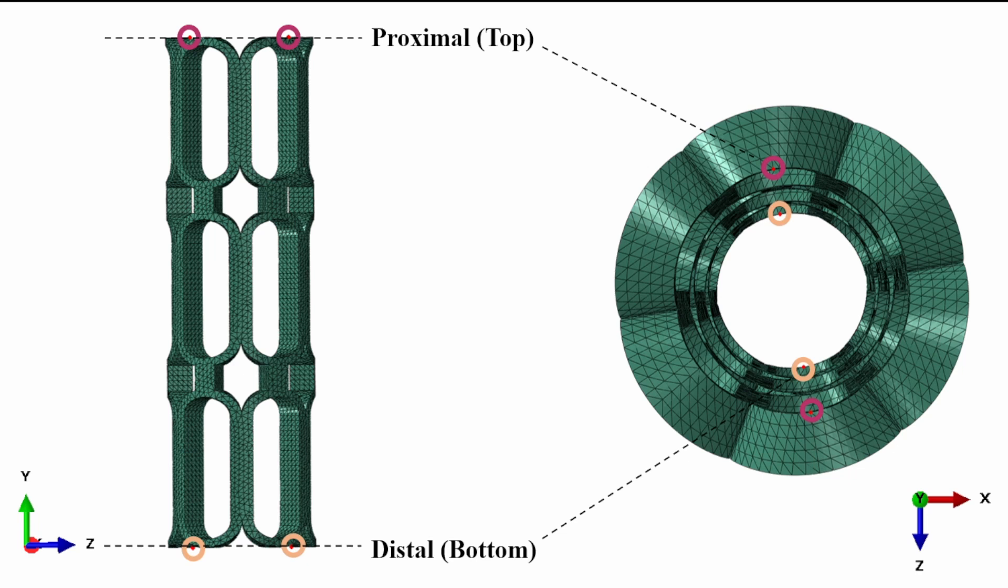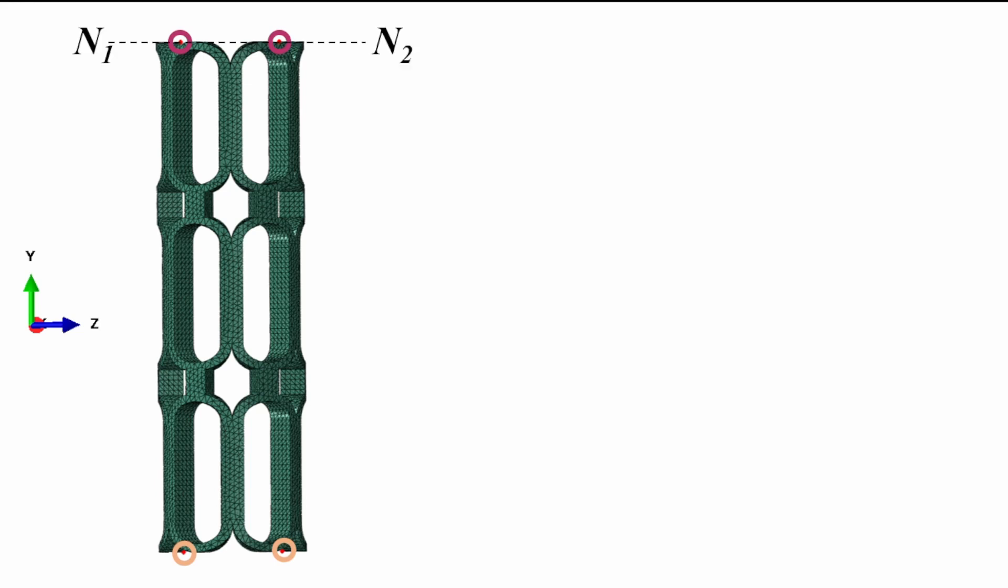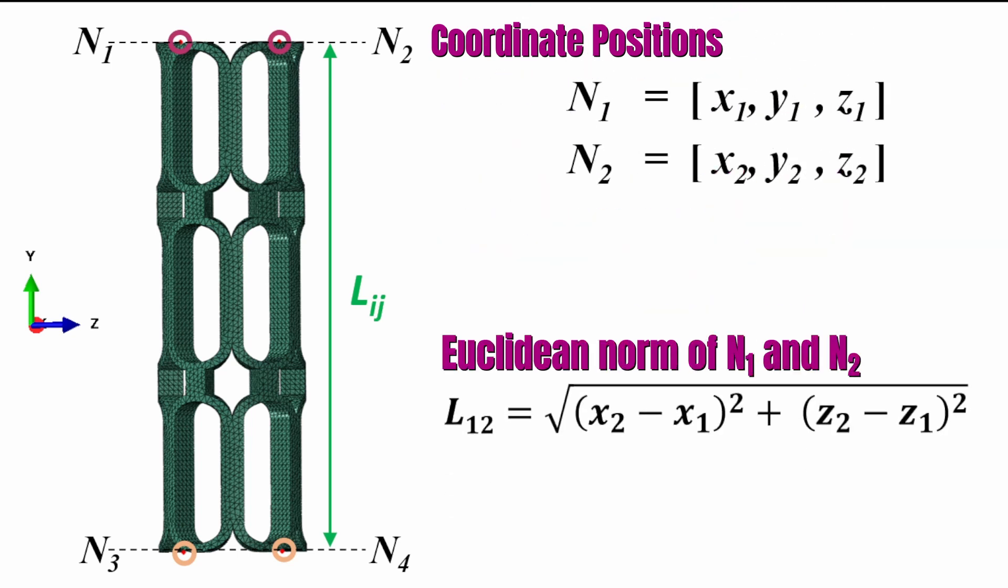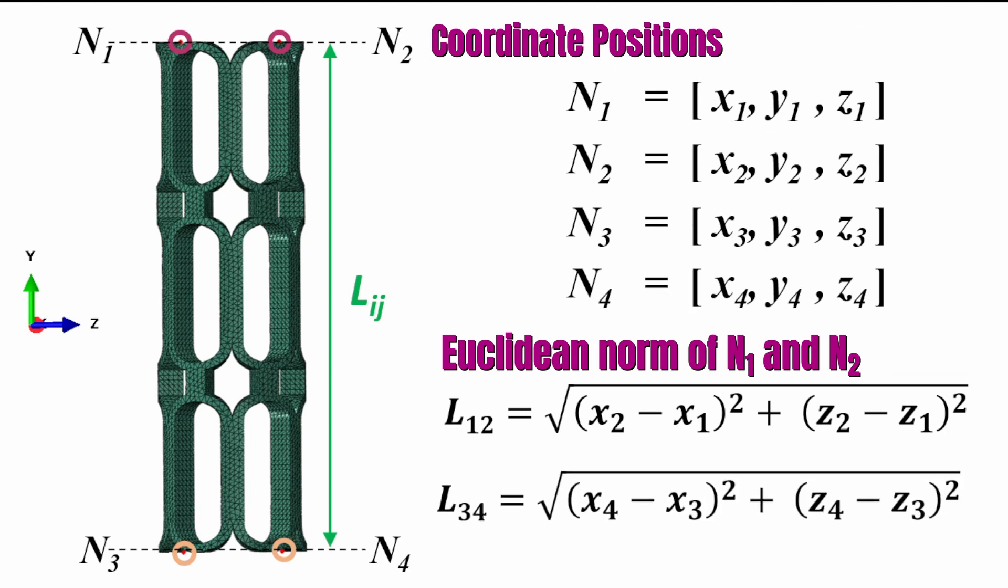Remember, what we're trying to determine here is the longitudinal retraction. So we need to find the total length of this stent and see how much this total length will change during the deformation, and that will lead us to determining the longitudinal retraction. If you look more closely here, I've got node one and node two for the top and node three and node four for the bottom ones. The overall length of that stent will be determined as L_IJ, where IJ refers to the combination between one and two. We'll obtain these coordinate positions for node one and node two, which using the Euclidean norm L_12 = sqrt((x2-x1)^2 + (z2-z1)^2), you can calculate the length separation. We'll also determine the coordinate position of three and node four, and that will help us determine the length of three and four.